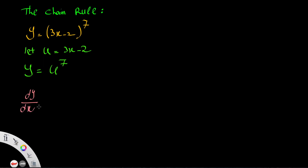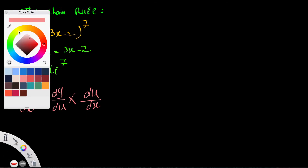The chain rule says that when you want to differentiate a function in terms of x which is expressed in terms of u, you first differentiate with respect to u, then multiply by the differentiation of u — the expression in terms of x — as if the du terms cancel out, leaving you with dy/dx at the end.